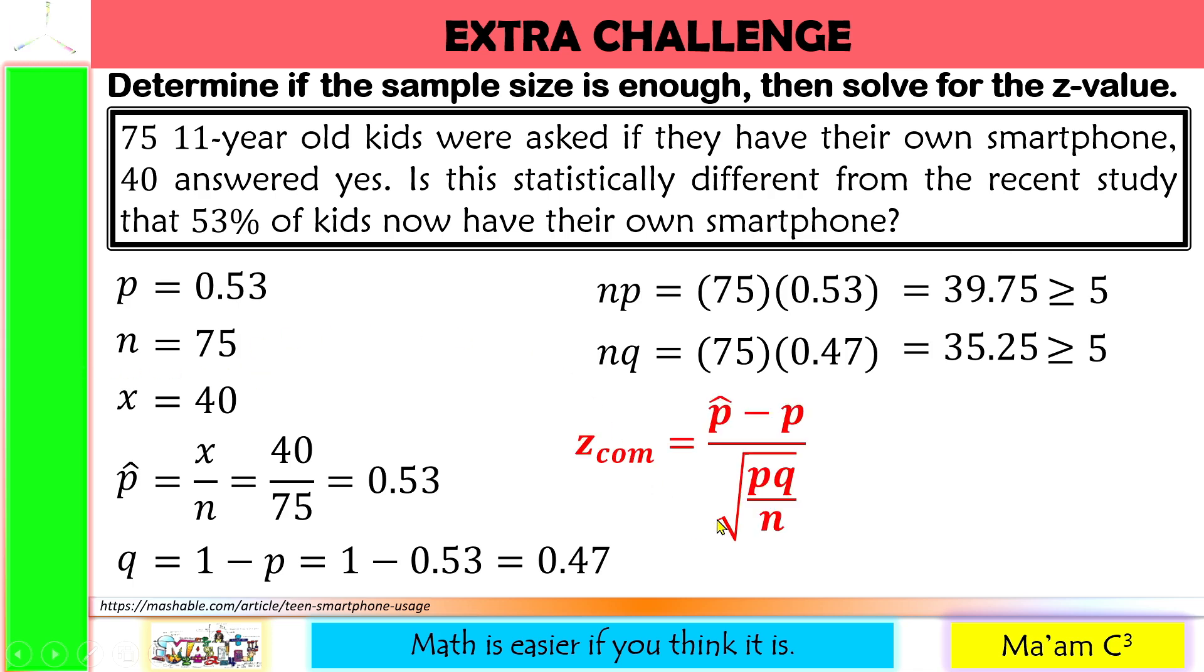Now, let us solve for our Z value. Let us substitute our given here. Our P hat is 0.53, our P is also 0.53. Again, P is 0.53, Q is 0.47, and our N is 75. Without using the calculator, you should know that the answer here is equal to 0. Why? Because 0.53 minus 0.53 is 0, and 0 divided by any number except 0 will give you 0 for an answer.